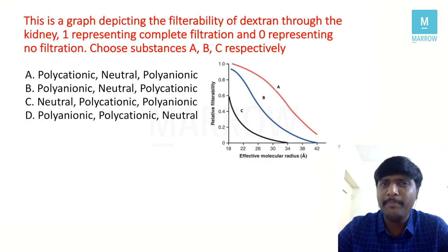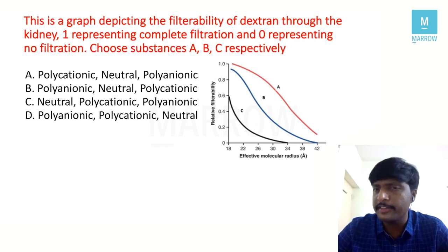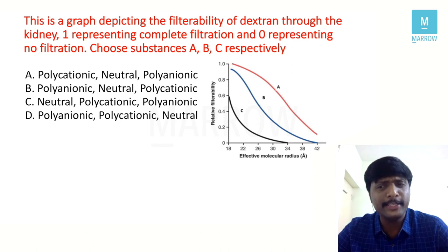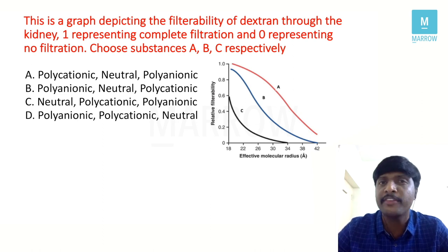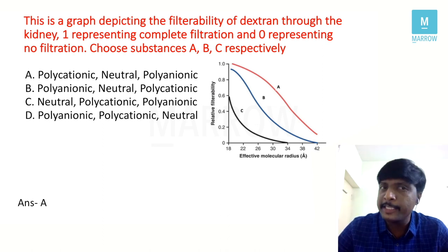This graph depicts filterability of dextran through the kidneys. One represents complete filtration and zero represents no filtration. We use dextran because in labs we can make it positively charged, negatively charged, or neutral. The answer is: A is polycationic, B is neutral, and C is polyanionic. Filtration is charge-dependent — positively charged molecules are filtered much more readily, followed by neutral, and the least filtered are negatively charged substances.